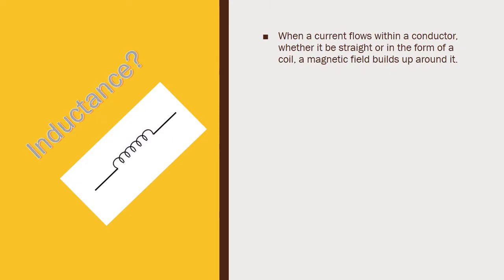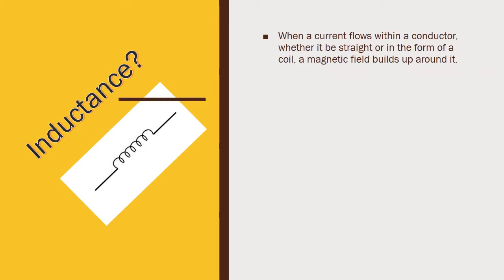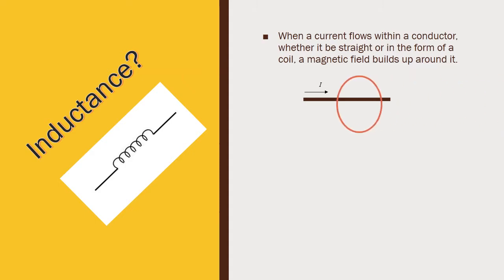First, let us see what is inductance. This is the symbol for an inductor. Whenever a current flows through a conductor, a magnetic field will be produced around that conductor. Consider this is a long conductor and I current is flowing through that conductor. Due to this current flow, there will be a magnetic field around that conductor. This is the normal principle.